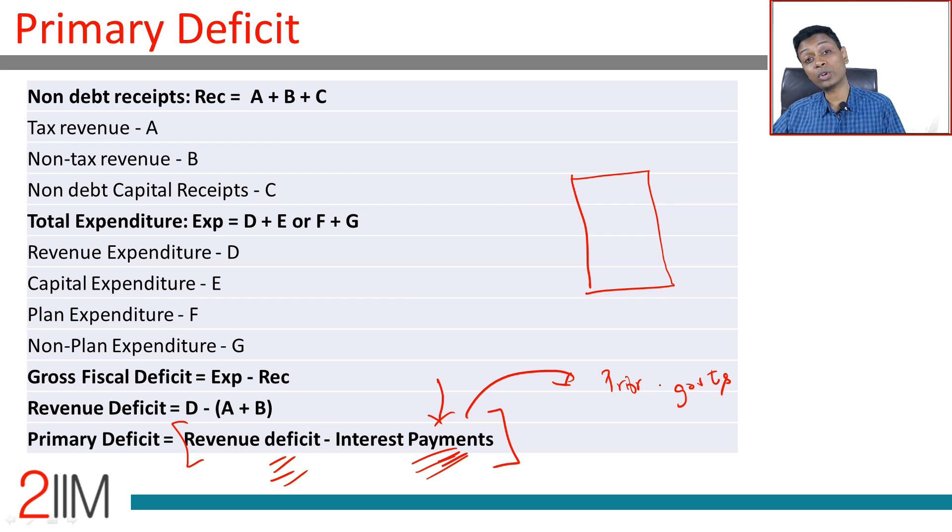Even after stripping out interest payments, if you are running a deficit, then your keeping the lights on spending is way more than your receipts. That means it is unsustainable. Sooner or later, something will have to give.